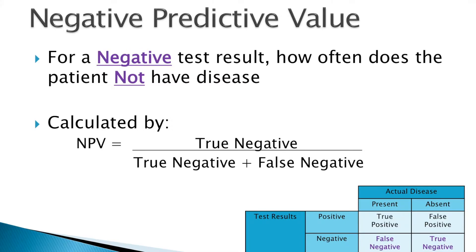Negative predictive value, on the other hand, informs the reader that where a negative test result is identified, how often does the patient not have the disease? Or to put it another way, how often if the test result is negative is it actually correct? We calculate negative predictive value by taking the true negatives and dividing them by the true negatives plus the false negatives.